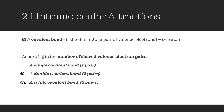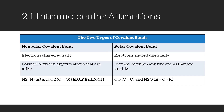Covalent bond: it is the type of bond which involves the sharing of a pair of valence electrons by two atoms. According to the number of shared valence electron pairs — namely one, two or three — the bonds can be called single, double or triple bonds respectively. Moreover, we can divide covalent bonds into two types: either polar or non-polar covalent bonds.